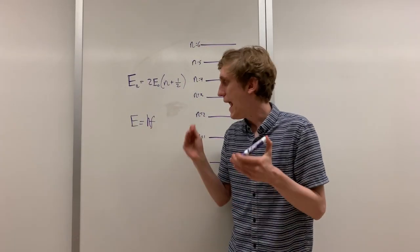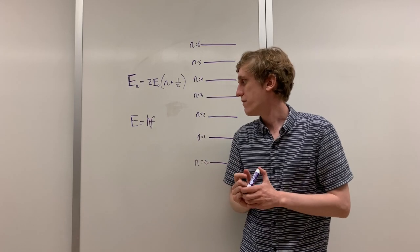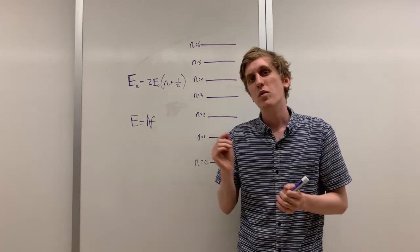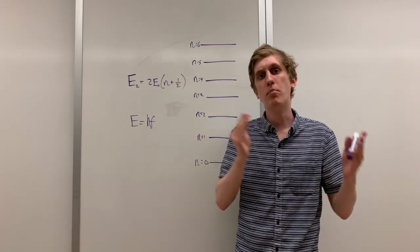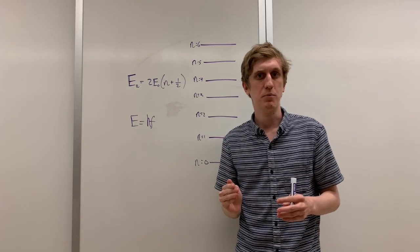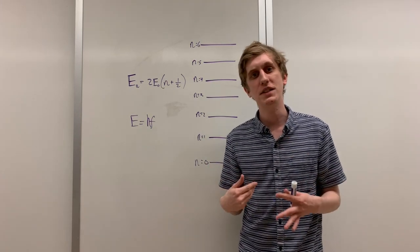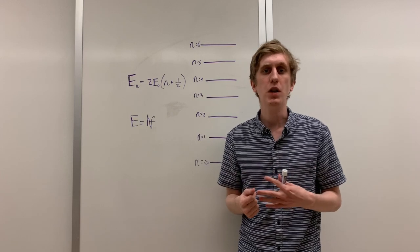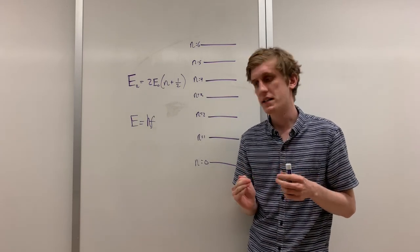Here, H is just Planck's constant and F is the frequency of the photon. Remember that light behaves like both a particle and a wave sometimes. F is the frequency of the light wave that the photon is a part of. Let's do a very quick example.